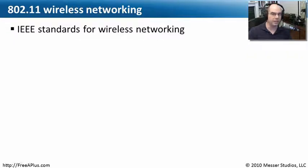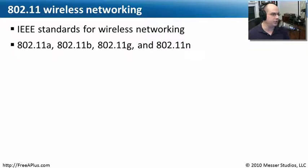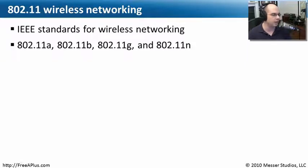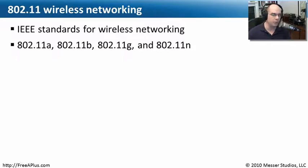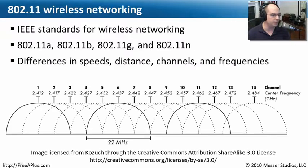The IEEE is a consortium of different people and companies coming together and deciding how all of this technology should work. Currently, there are four standards in use for these wireless networks: 802.11a, b, g, and n. You may see these used in different places and different ways. You need to have an understanding of what all of those are, and we'll step through each one in this module.